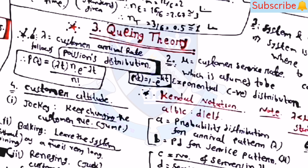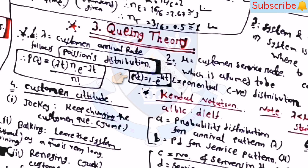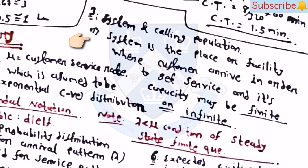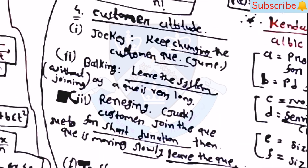Mu (μ) is the customer service rate, assumed to follow an exponential distribution: P(t) = 1 − e^(−μt). The system is the facility where customers arrive to get service; its capacity may be finite or infinite. The steady-state condition requires λ < μ for a finite queue.